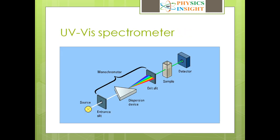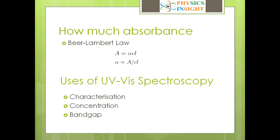The question is: how much light is absorbed by the sample? According to Beer-Lambert's law, the absorbance of the sample is directly proportional to the concentration and the length of the sample. Here L represents the length of the cuvette, which equals the path length through the sample, and C is the concentration of the sample being used. Alpha is the constant of proportionality, also called the absorption coefficient.